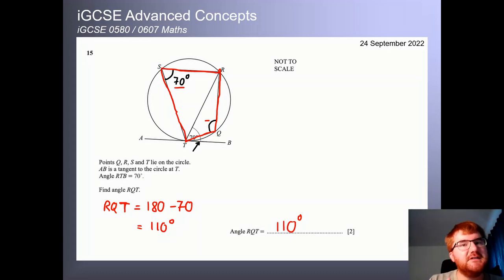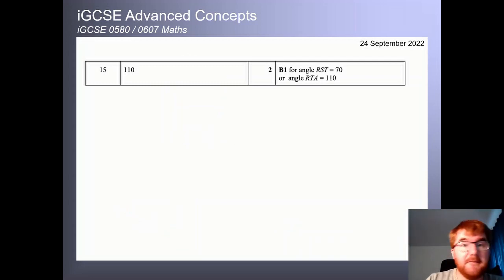So this could be the two marks that make the difference between that A and A star grade. And you can see if you don't spot the alternate segment theorem here, then you're going to lose out on those two marks. OK, there's the mark scheme for you as well.